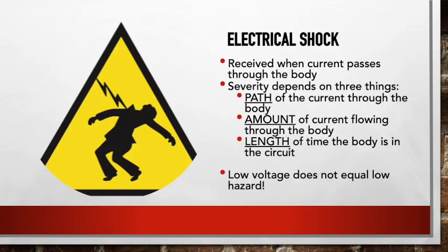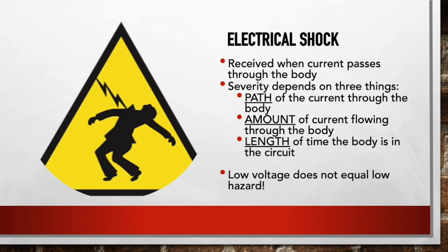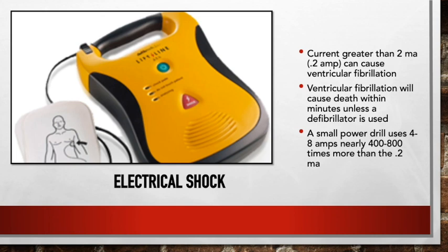Electrical shock happens when current passes through the body. Severity depends on three things: the path of electricity through the body, the amount of current flowing through the body, and the length of time the body is in the circuit. It's not the voltage that kills you — it's the amperage. Your body is a conductor; your nervous system is actually an electrical system, so when it contacts electricity, it draws amps into the body. Low voltage does not equal low hazard because of the amps your heart is drawing in.